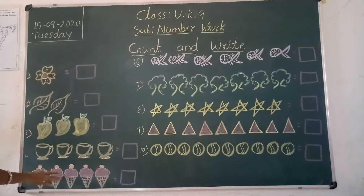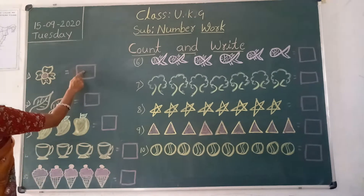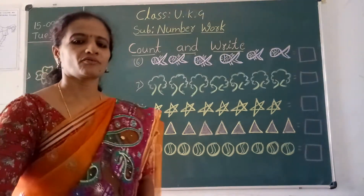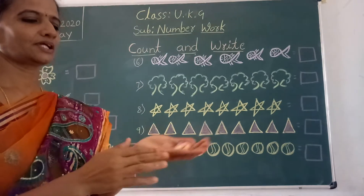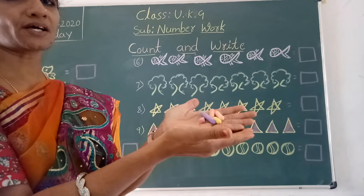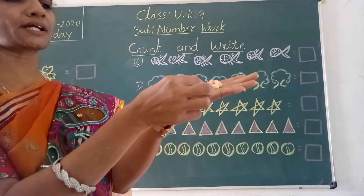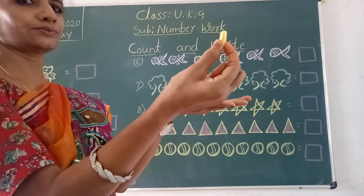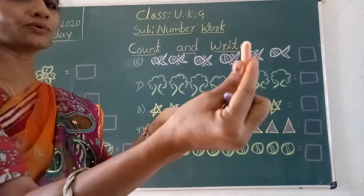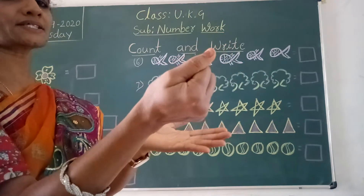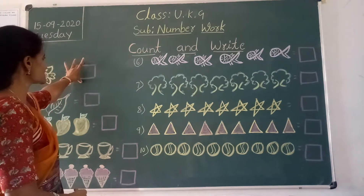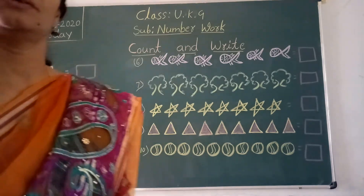Count the objects and write the numbers in the box. See here, in my hand, how many chalk pieces are there? We will count, children: 1, 2, 3, 4, 5. So like this we will count the objects and write it in the box.